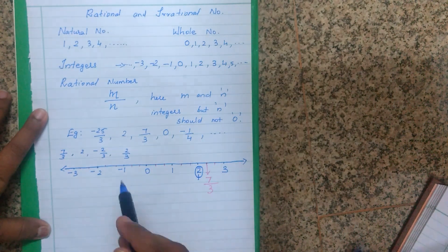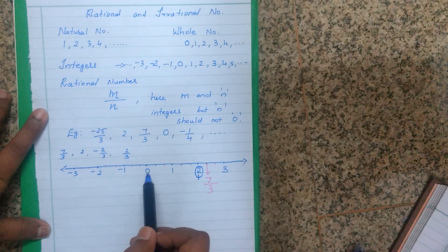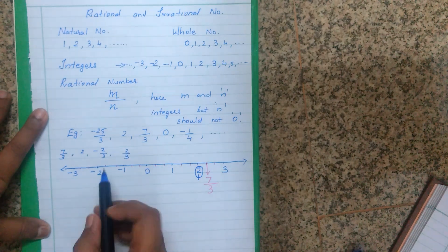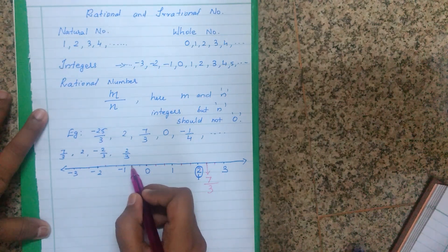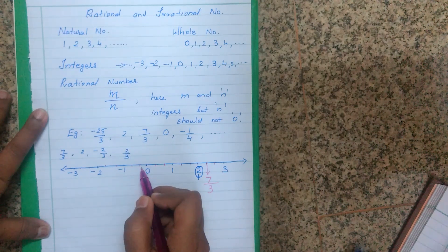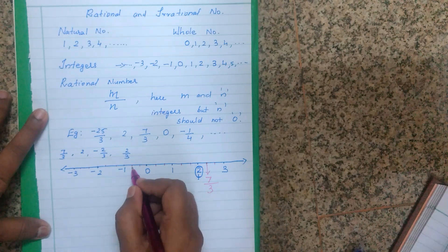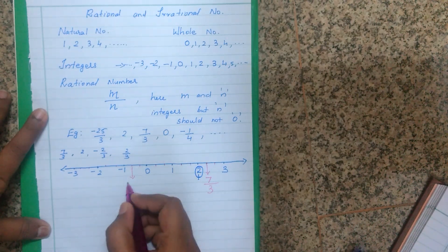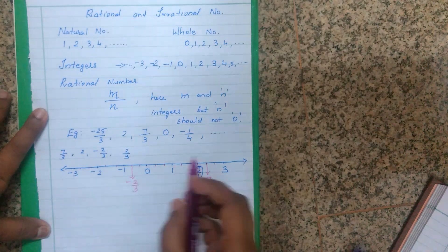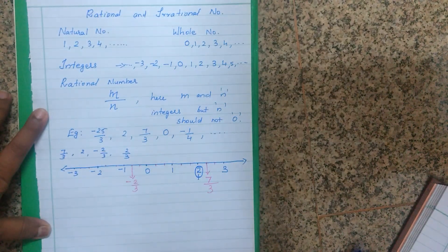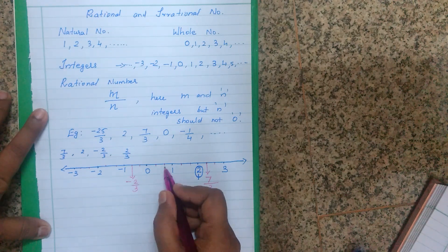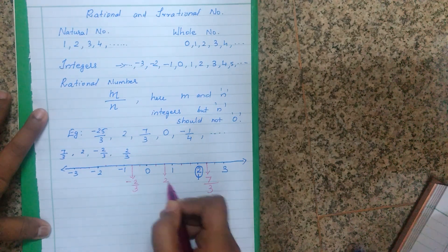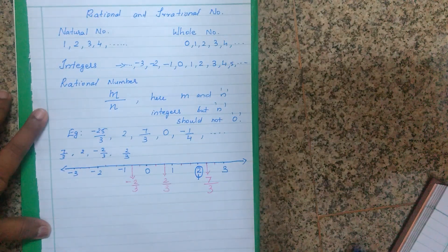Next, minus 2 upon 3 — negative numbers come on the left hand side. Count 1 and 2 from zero going left: the first point is minus 1 upon 3, the second point is minus 2 upon 3. Then 2 upon 3 is a positive number, so it comes on the right side. Count 1, 2 — the second point is the rational number 2 upon 3.